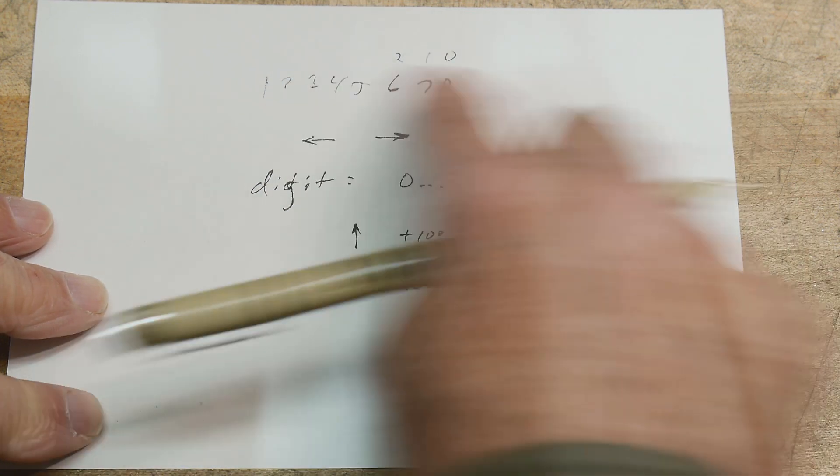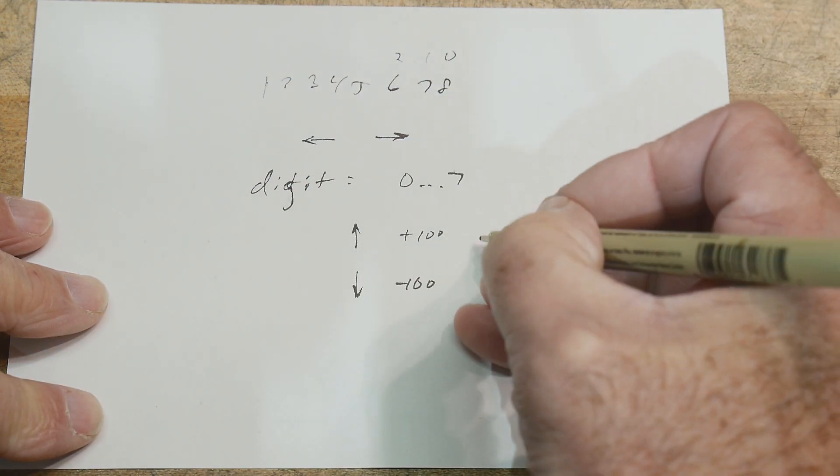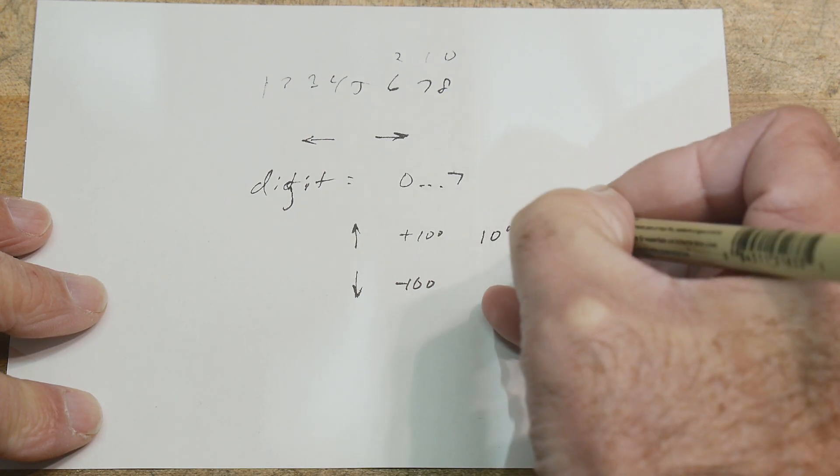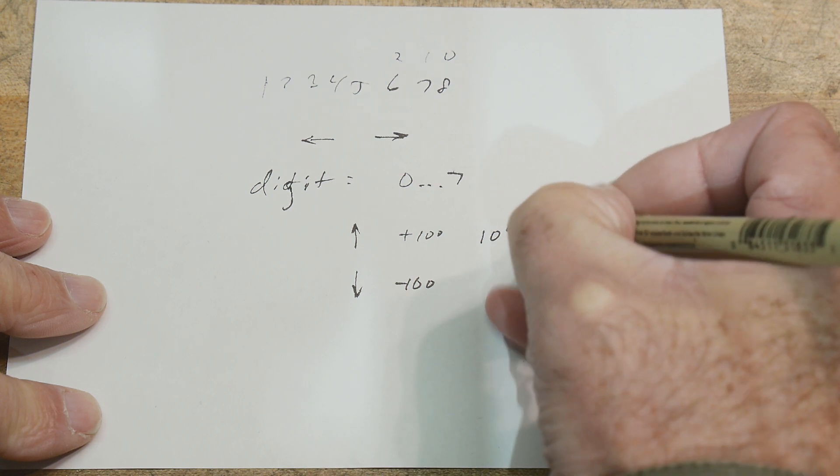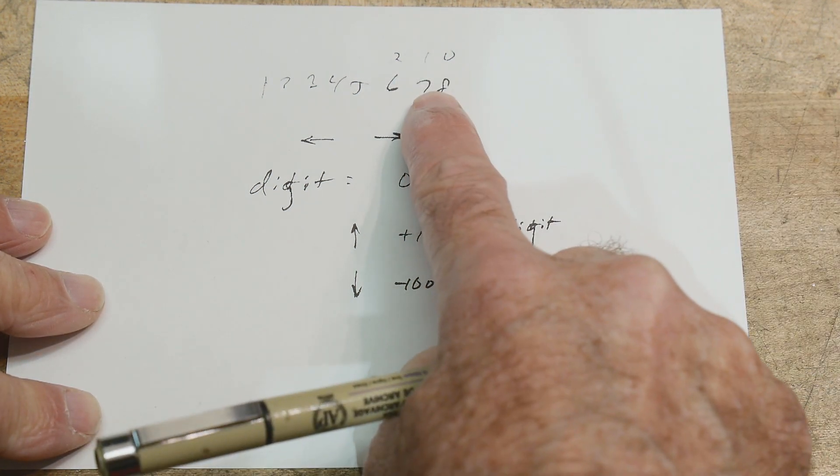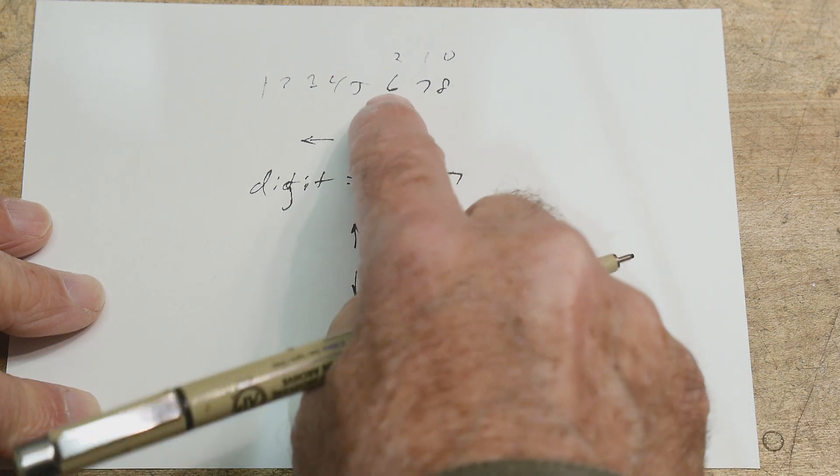So let's say you're in the, here's zero one, let's say you're in the two digit. Okay. Two digit means that you want to be in the hundredth column. And so the up arrow and the down arrow just need to add a hundred or subtract a hundred. And that's all they need to do. Well, we can use our digit. We can say, well, that's 10 to the digit. So 10 to the zero is one, 10 to the one is 10, you know, a hundred thousand.